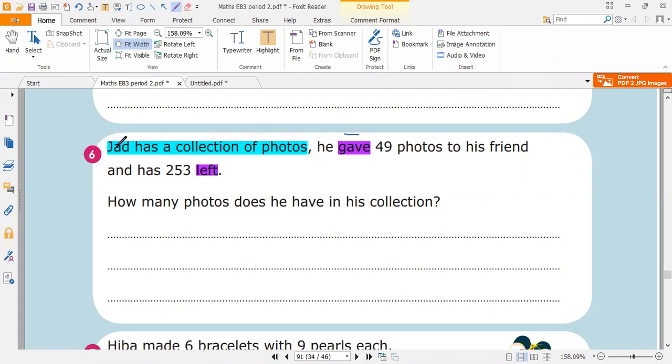Again, let's read it. Jad has a collection of photos. They didn't say the number of photos first. They said only that Jad gave 49 photos to his friend and the rest of the photos is 253.